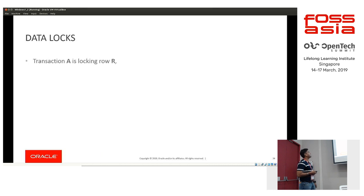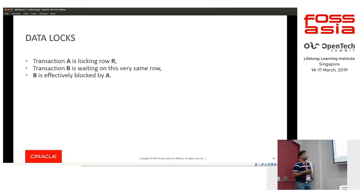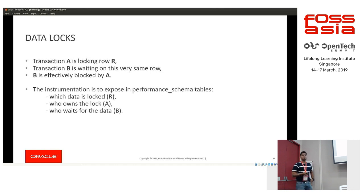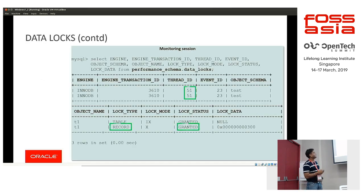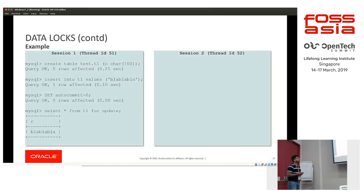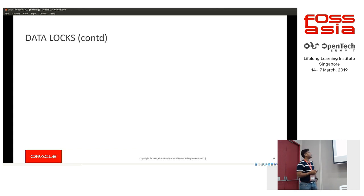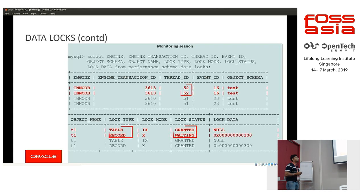Data locks tables have also been added to Performance Schema in 8.0. If transaction A locks a row R and transaction B also intends to lock the same row, B is blocked by A. This table shows which data has been locked, who locked it, and who is waiting for it. For example, when a SELECT FOR UPDATE locks all rows on a table, the monitoring session shows thread 3D51 was granted an exclusive record lock. When session 2 tries to get rows from the locked table, Performance Schema shows thread 3D52 is waiting for the record lock that was granted to 3D51.